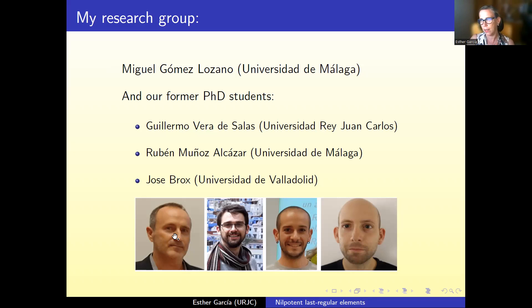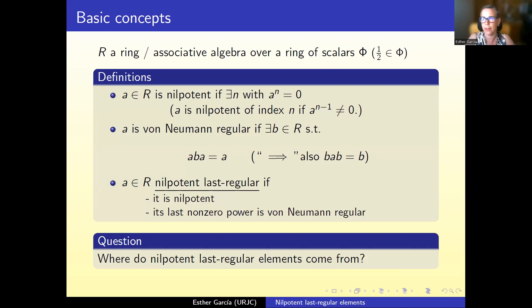What we are going to present this afternoon is joint work of all of us. Our context: R will always denote either a ring or an associative algebra, or a ring of scalars. Our usual assumption is that one half is invertible in the ring of scalars, or that the ring has no two-torsion. To get the definition of a nilpotent plus regular element, we combine two classical notions.